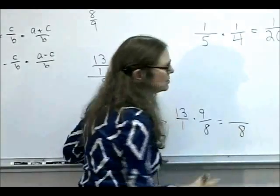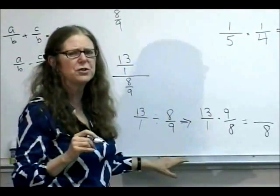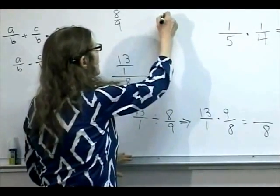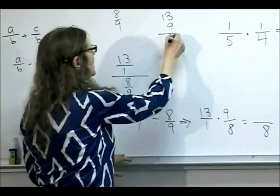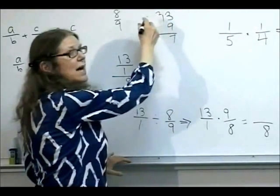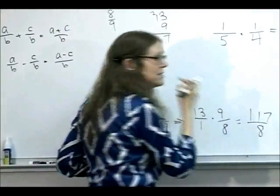Okay. So by our rule for multiplication, the answer is going to be thirteen times nine divided by eight times one. Eight times one is eight. Now I'm going to give you a little suggestion. I never do things like this in my head because it's much easier to make arithmetic mistakes that way. I always write it out. All right. Thirteen times nine. Three times nine is twenty-seven. Carry the two. Nine times one is nine. Plus two is eleven. So this is equal to a hundred and seventeen eighths.